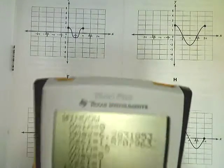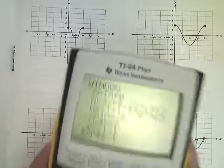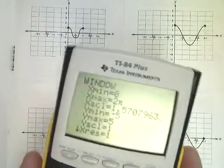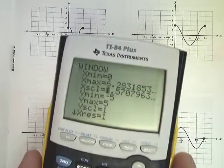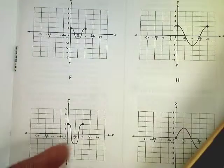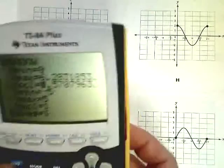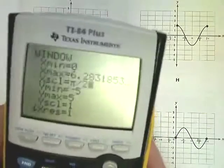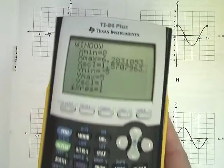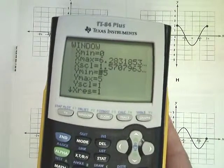So I went into my window and changed it. This number is essentially 2π, I'm just rewriting it. The x-scale is how much each one of these grid marks is worth, and it's π/2. This gives me a nice look that should match much better to what I'm doing.